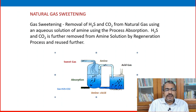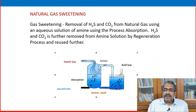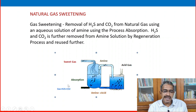Gas sweetening is the removal of H2S and CO2 from natural gas using an aqueous solution of amine, using the process of absorption. H2S and CO2 are further removed from the amine solution by a regeneration process and reused. Let us have a quick look at the picture. The first tower is where absorption takes place — sour gas entering contains natural gas plus H2S and CO2, which we call acid gas.